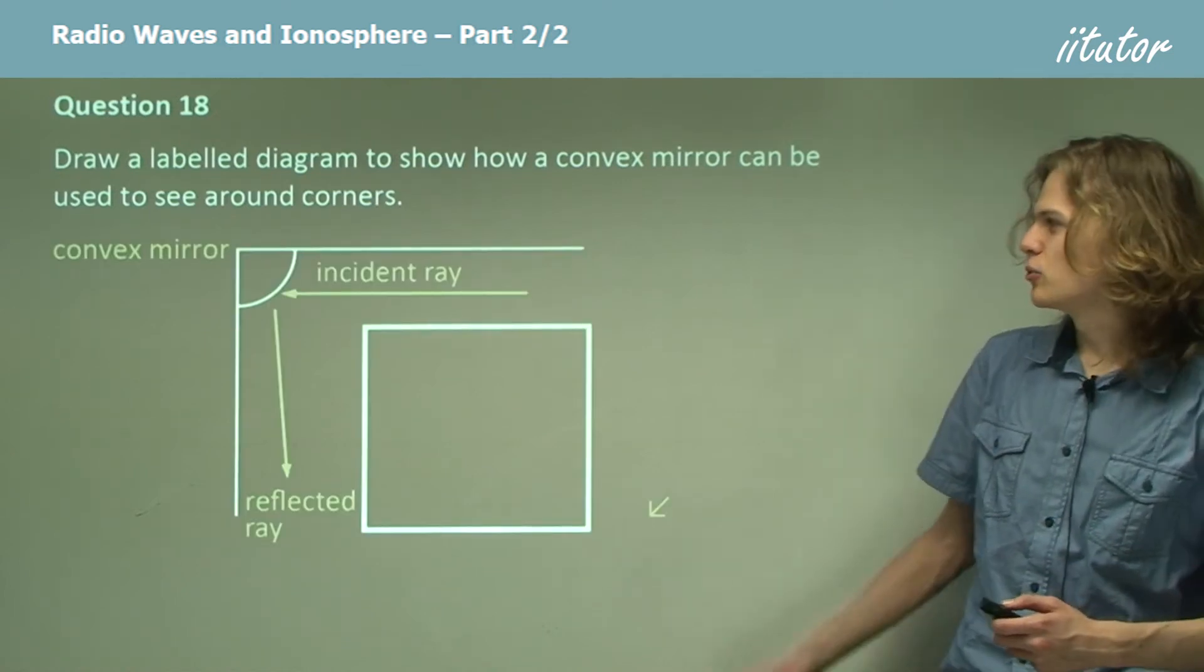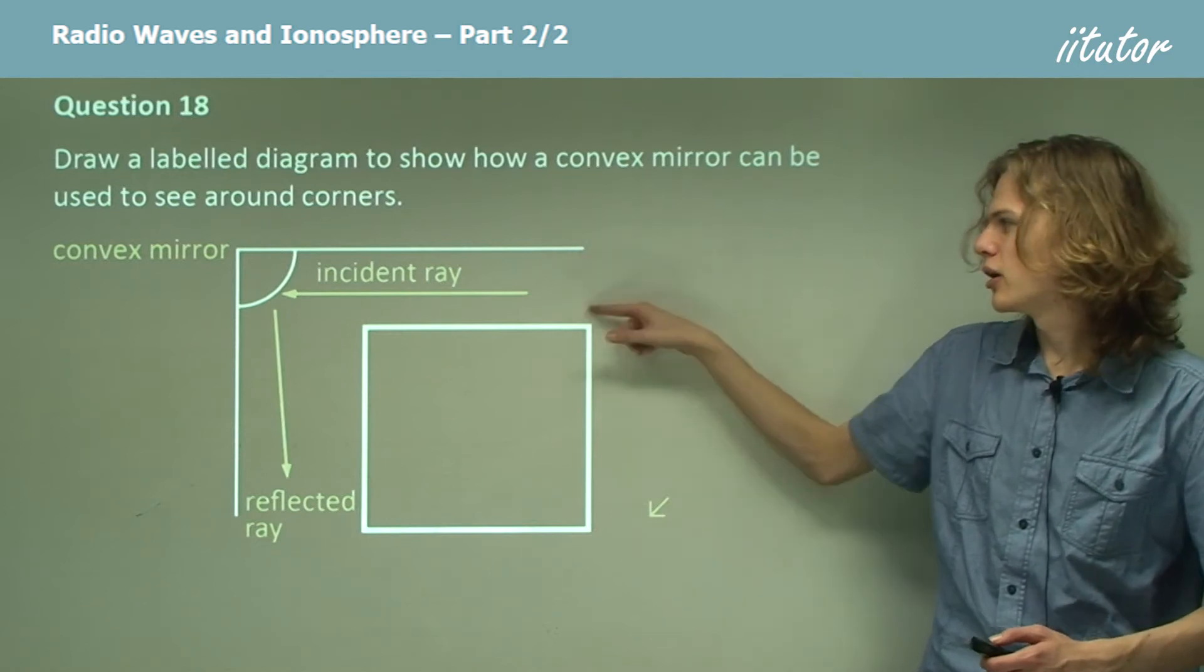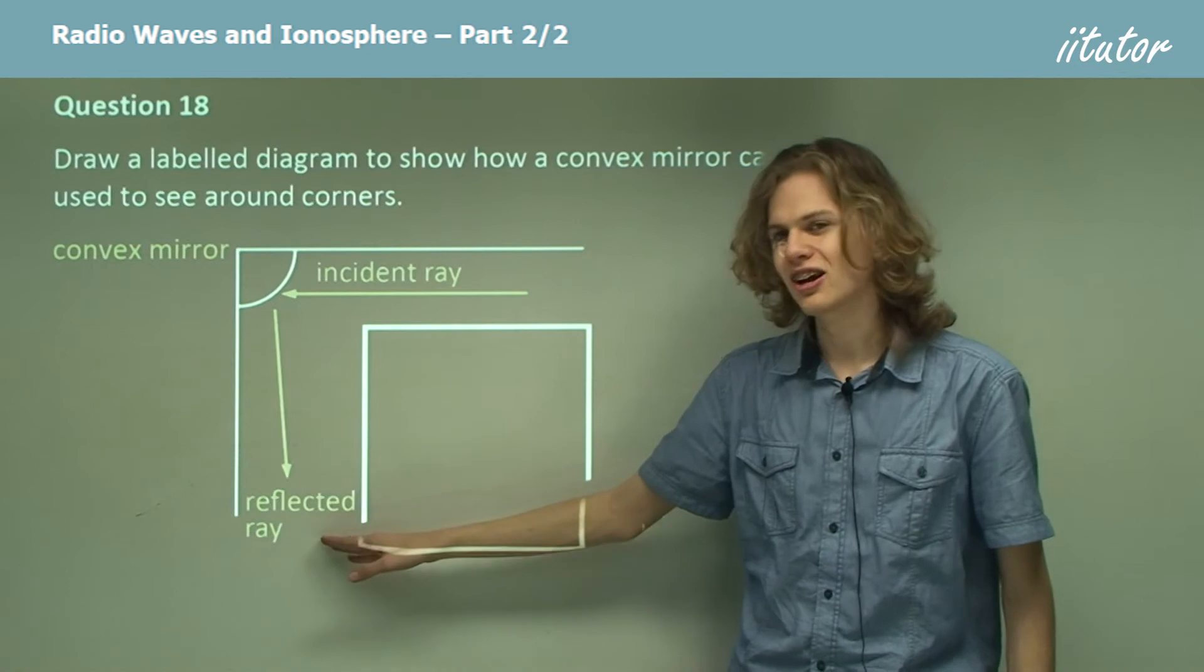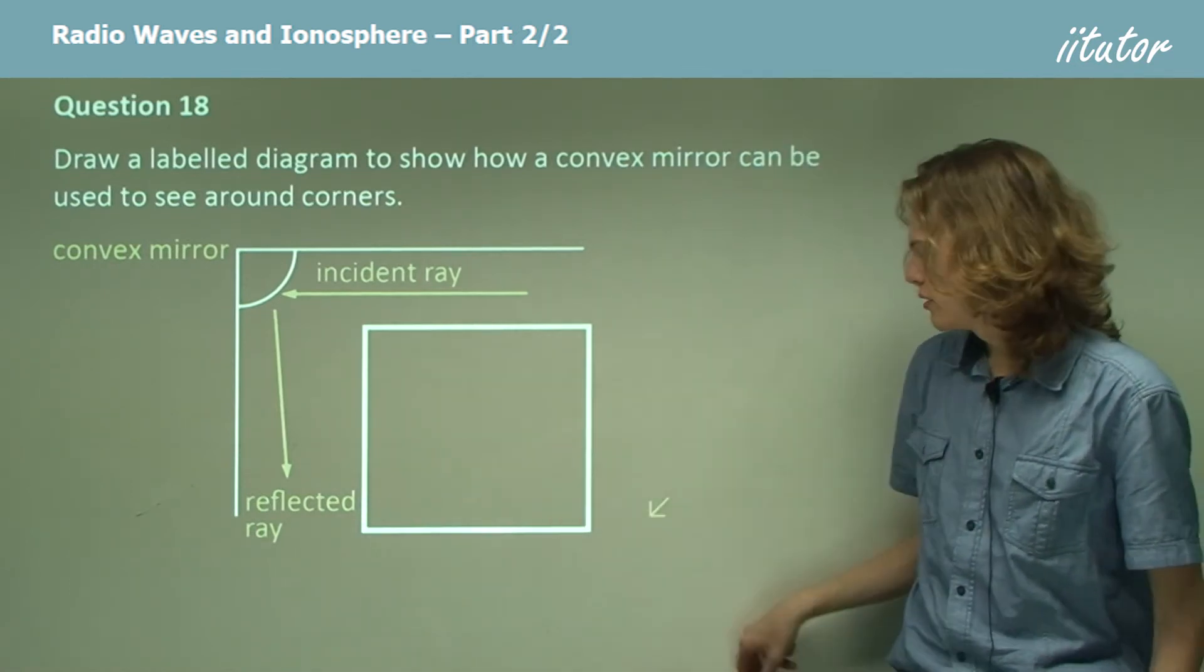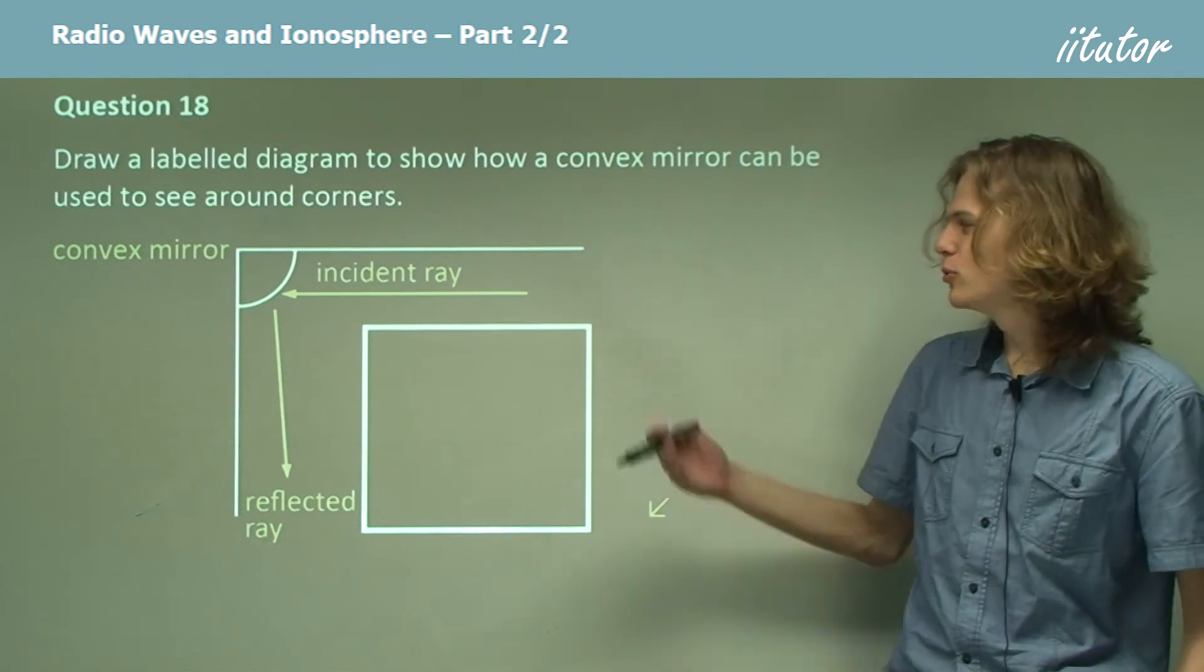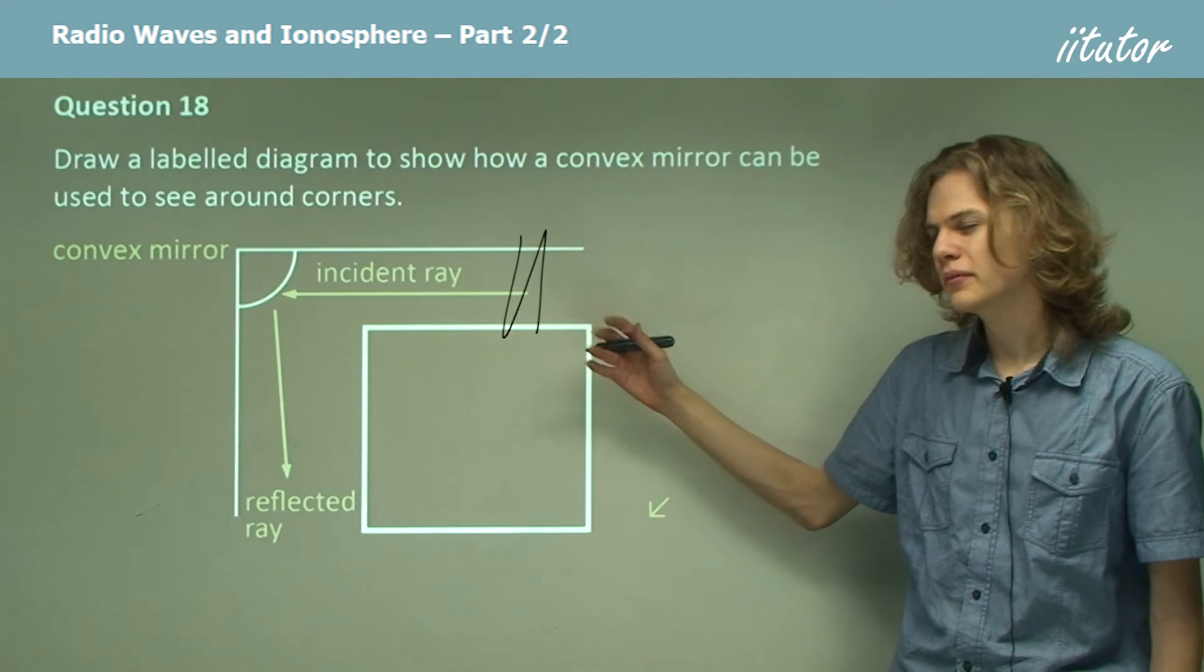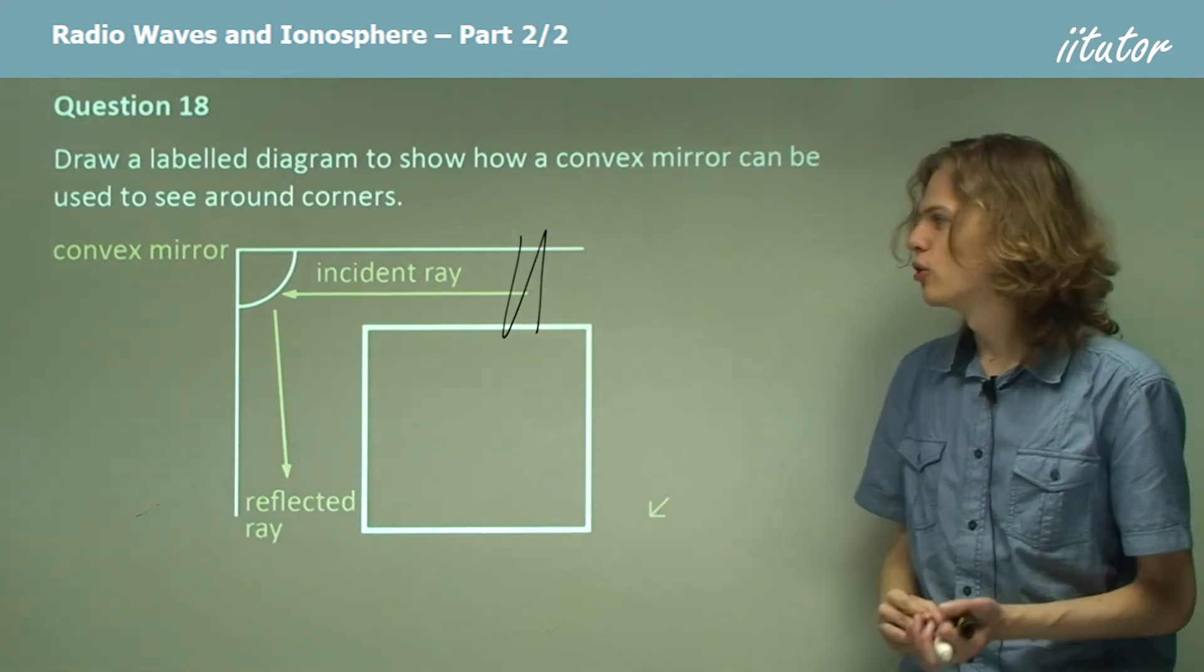We can see that we have a convex mirror and an incident ray from this part of the corner. The incident ray is being reflected from the mirror down to over here. This means that if we're looking into the mirror, then we can see a wide region of space in this part of the alley, instead of a relatively narrow region if we had a plain mirror or a concave mirror.